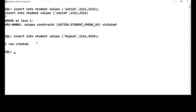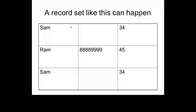Let's look at the primary key constraint and why we need it. So far we have learned unique constraint, check constraint, not null, and default. I've applied all these constraints on a table — name has not null, phone number has unique, marks has check and default. But there are still certain issues. We have two students with the same name Sam, both scored 34 marks with no phone number. They are two different students but appear as duplicate entries — they are actually unique records.